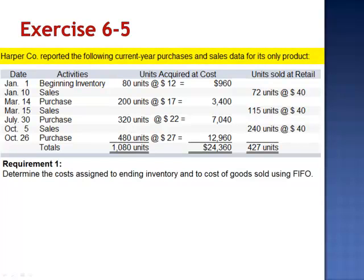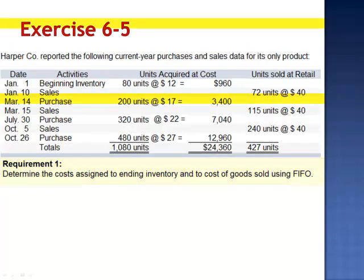Exercise 5. Harper Company reported the following current year purchases and sales data for its only product. We are asked to determine the cost assigned to ending inventory and the cost of goods sold using FIFO.